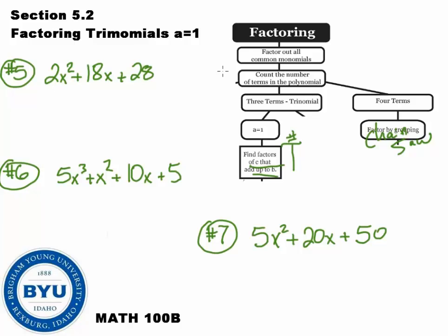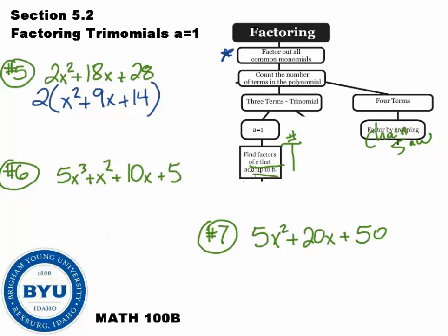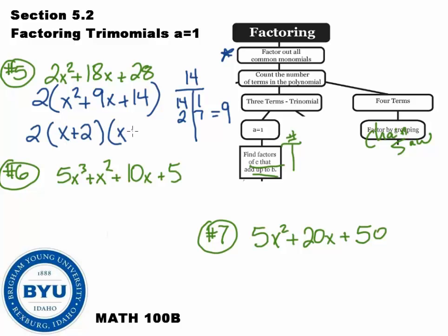Step number 1: factor out all the common stuff. I've got 3 terms, and it looks like all of these can be divided by 2. I'm going to pull the 2 out, leaving me with x squared plus 9x plus 14. Now let's work on factoring the inside: 3 terms, a equals 1. I need the factors of c — which is 14 — that add to b — which is 9. Factors of 14: 14 and 1 doesn't add to 9, but 2 and 7 does. My final answer is 2 times x plus 2 times x plus 7. Don't forget to write the 2 from the first step.